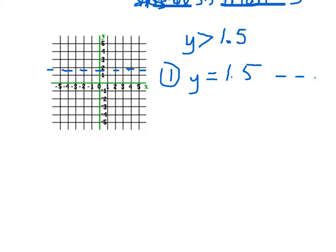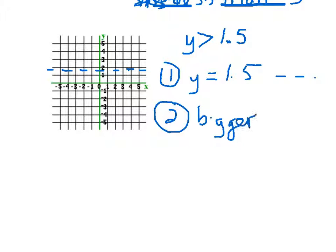Step two is we need to shade, and we need numbers bigger than 1.5. So when we look at the dotted line we just drew, all of these above the line are going to be bigger than 1.5. So we shade those. And that's it.